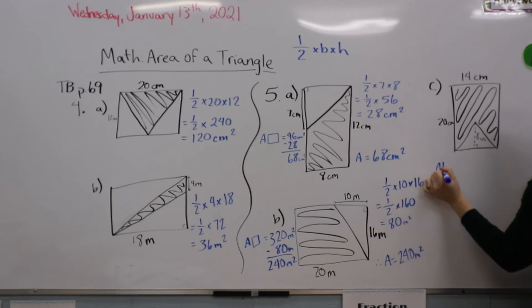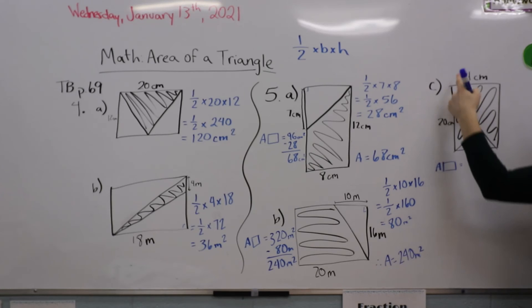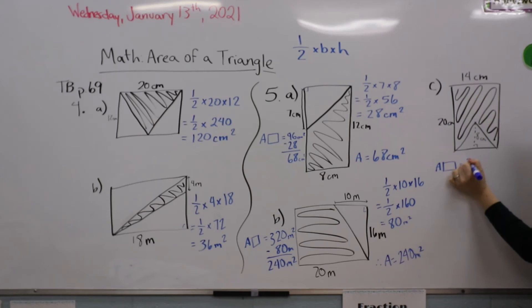Area of the rectangle is 20 centimeters times 14, which I'm just going to tell you is 280 centimeters squared.